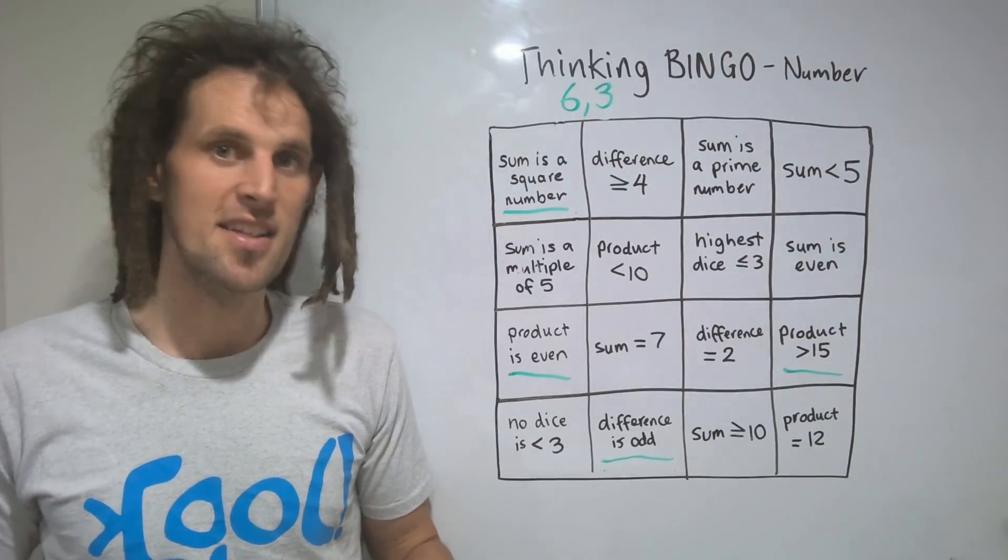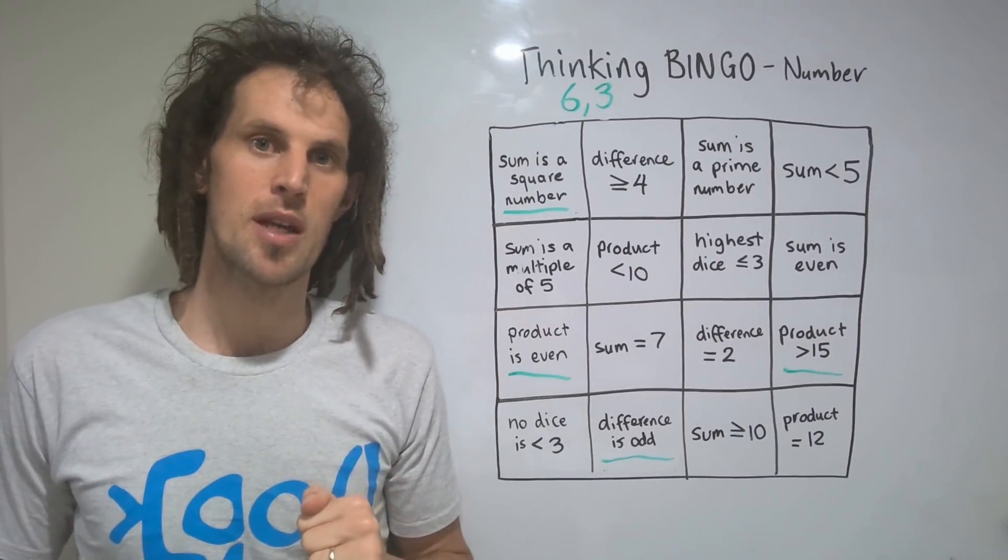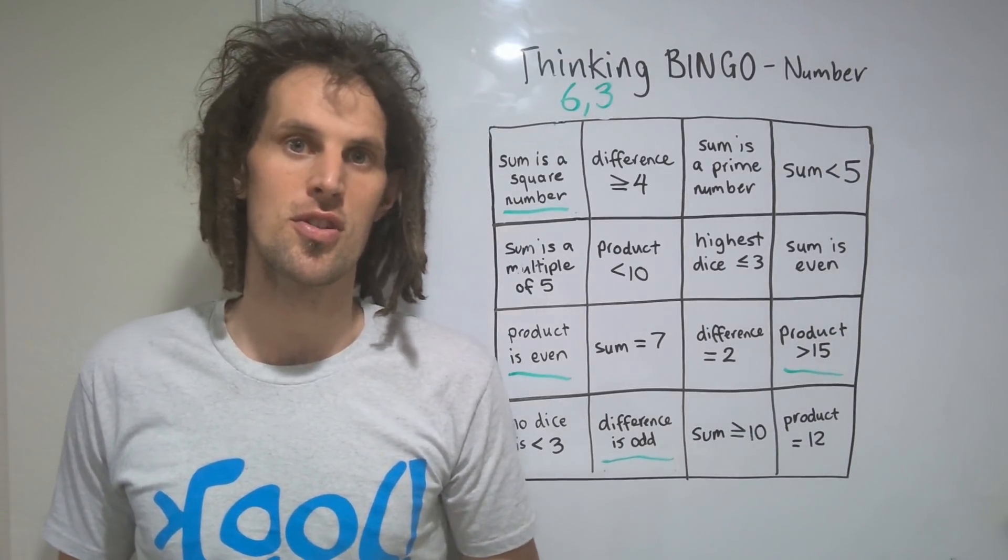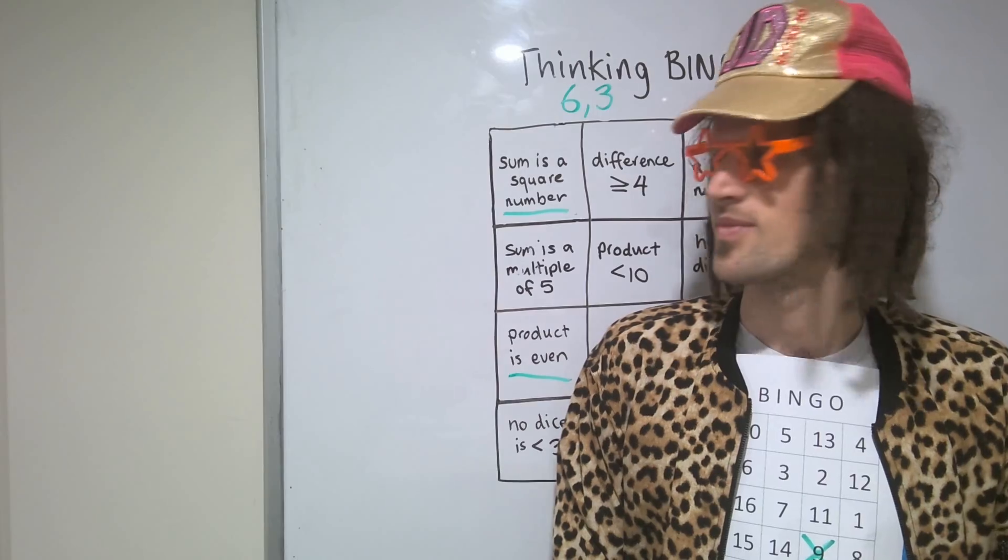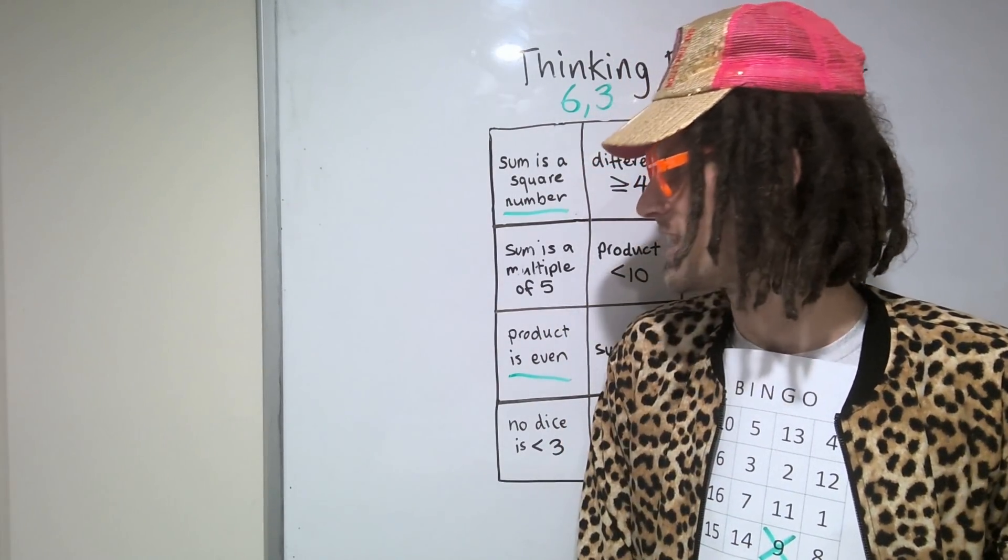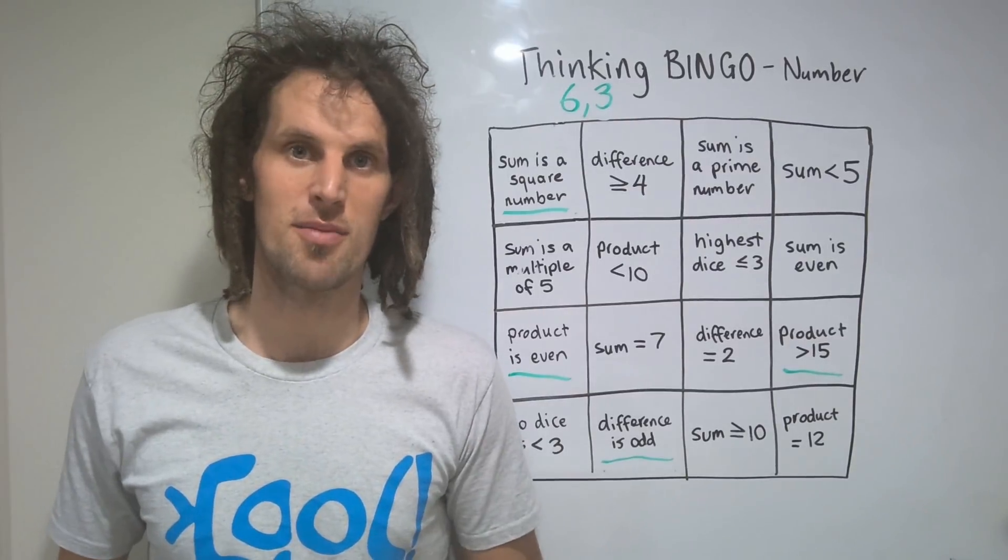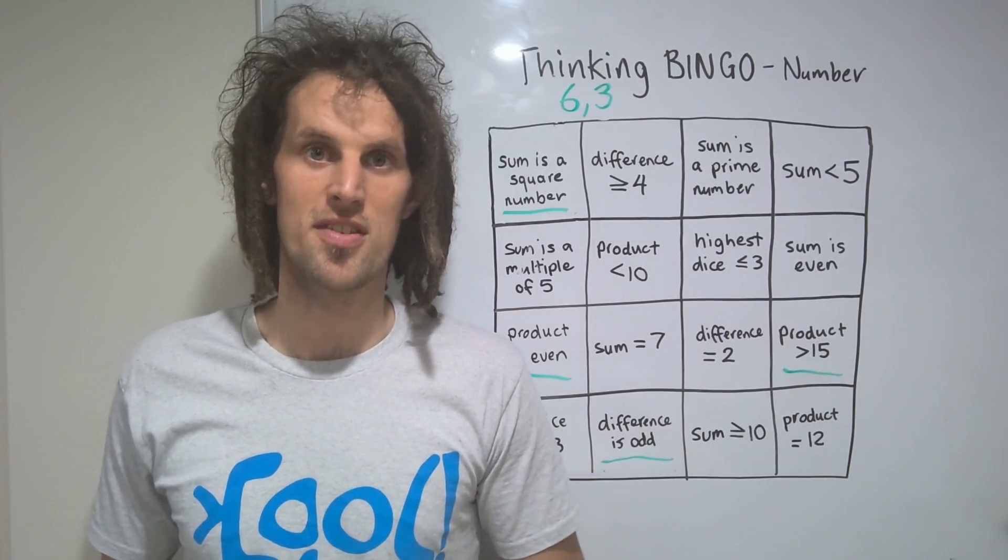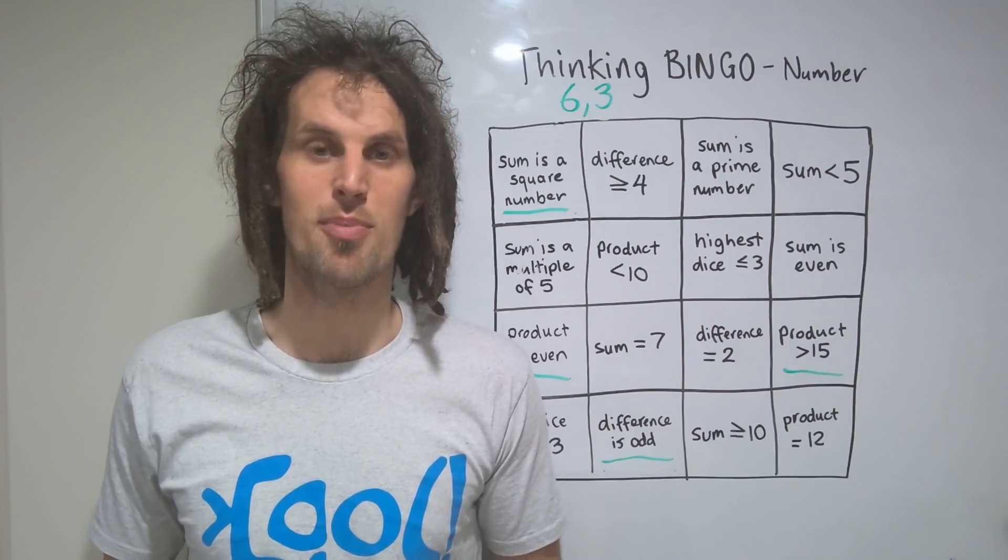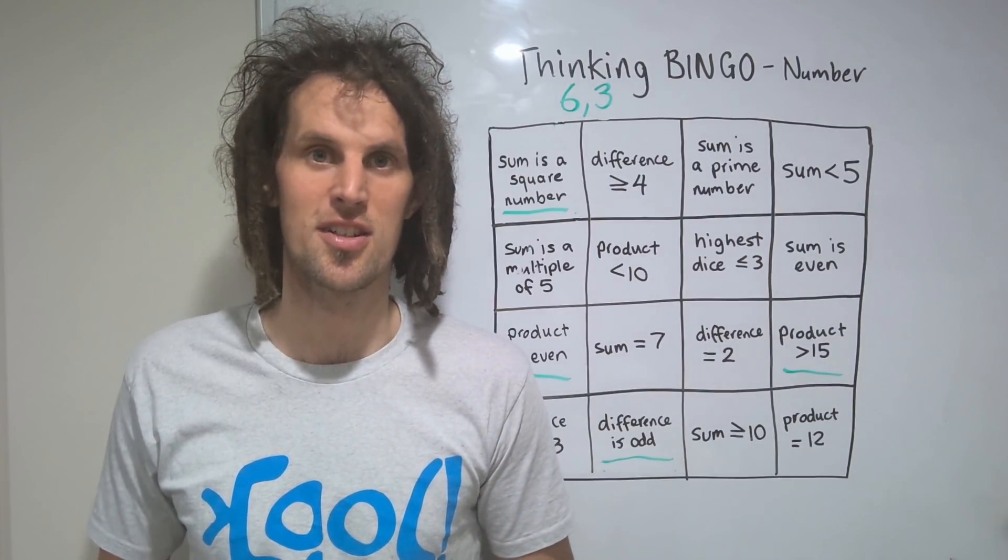In fact, a full game of thinking bingo exposes people to 136 uses of mathematical language. This is the most natural way to learn mathematical language. Not by looking at a dictionary and memorising things, but by using language repeatedly again and again in the context you understand.